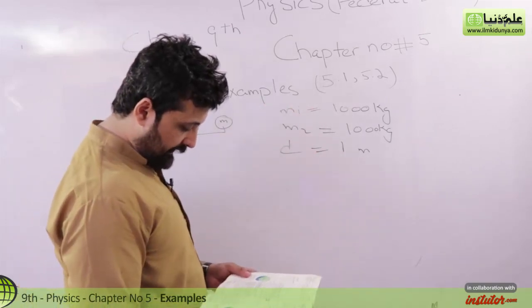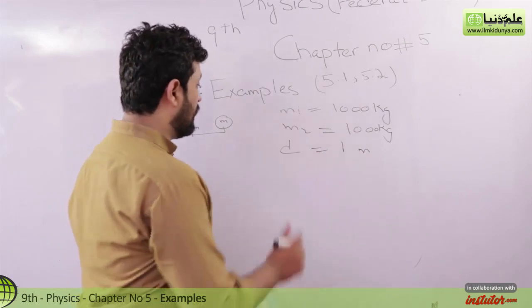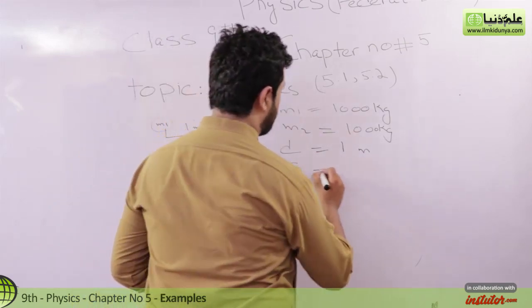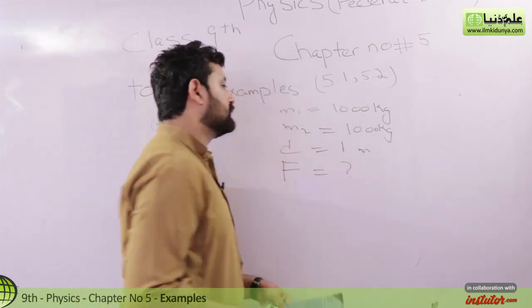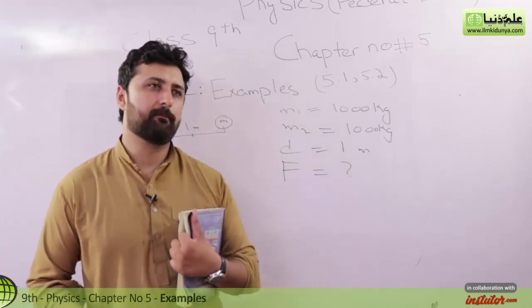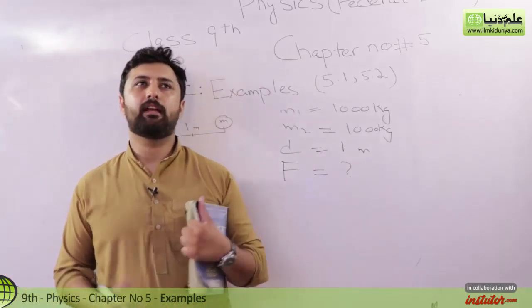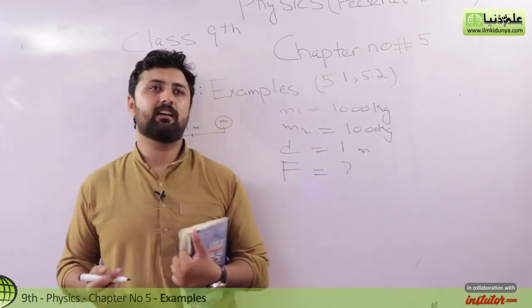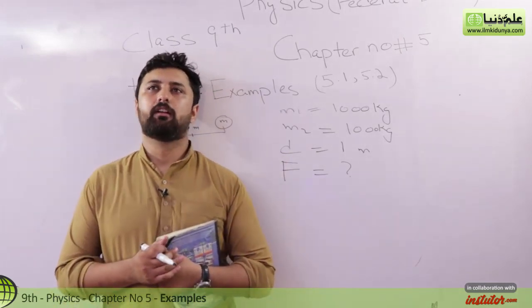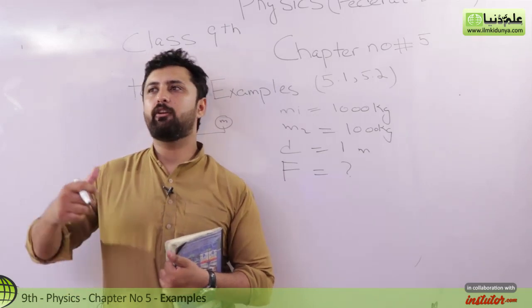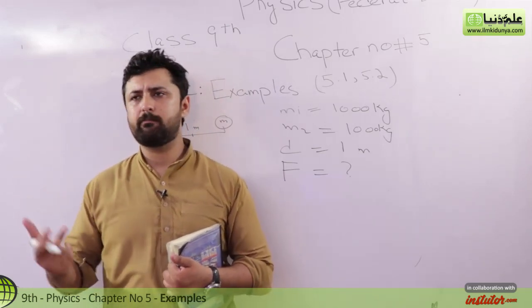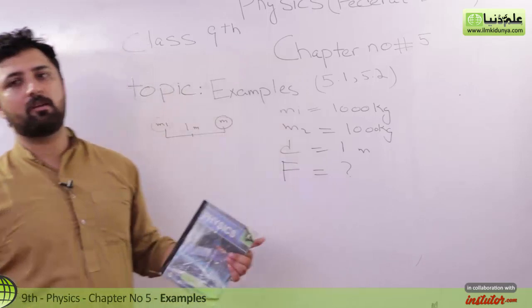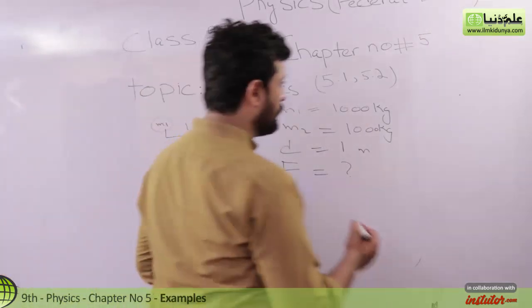Then what did we find? The gravitational force. Now, when I see the question, two bodies are given, m1, m2. The distance is given, which formula will we use? The value of g is given for two bodies. The mass of the earth will not be used. The third formula.